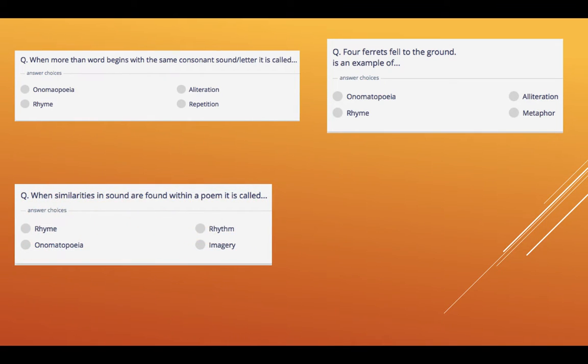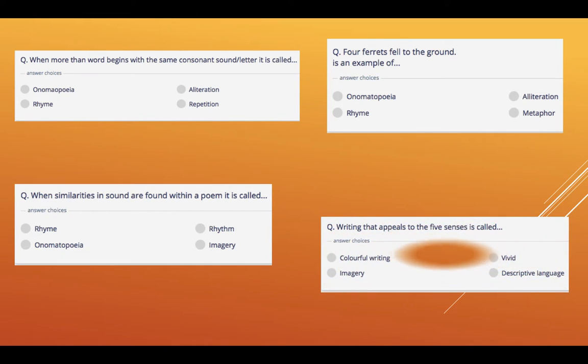When similarities in sound are found within a poem, it is called rhyme, rhythm, onomatopoeia or imagery. Now that's similarities in sound. And number ten, which is the last one,